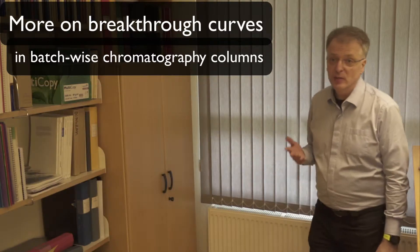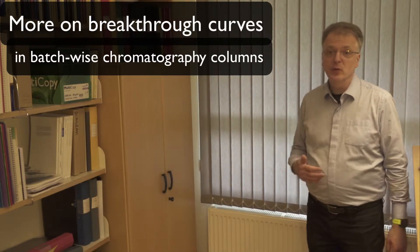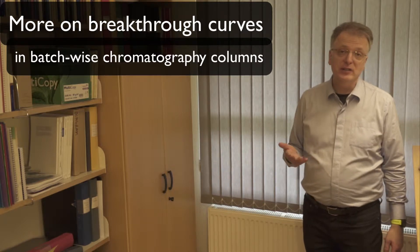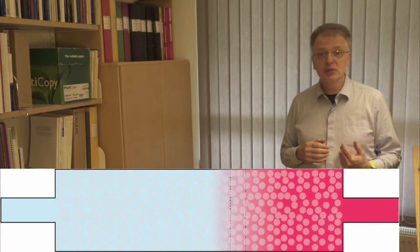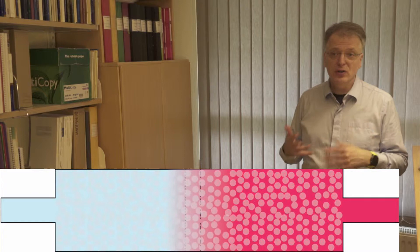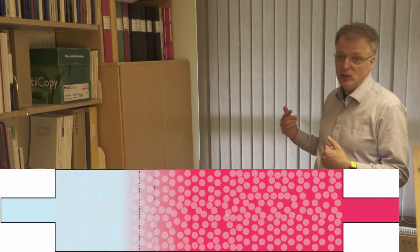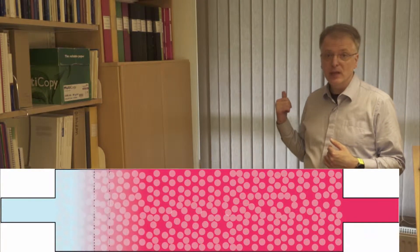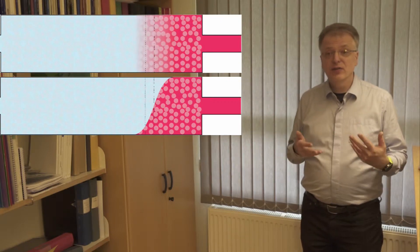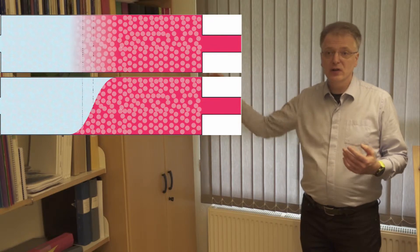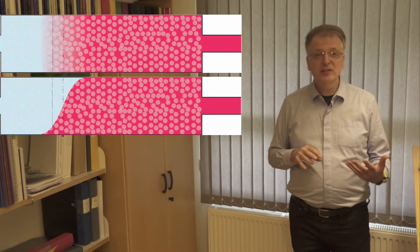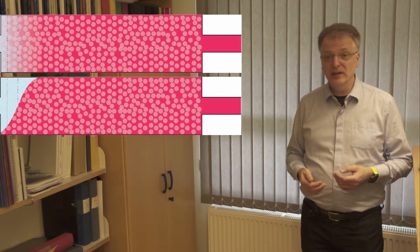In batch-wise column adsorption we start with a column filled with water or some other liquid that does not adsorb to the adsorbent. The water is blue in this animation and the red is the substance being adsorbed. The darker the red, the higher the concentration in the water. In this second animation I have instead illustrated the front as a concentration curve that moves along the column. The two animations are two ways to illustrate exactly the same thing.